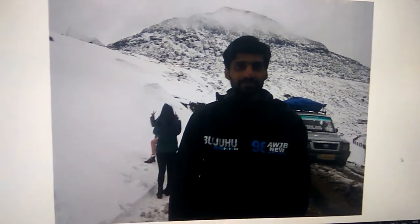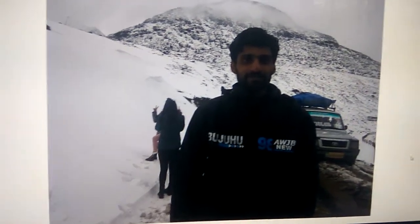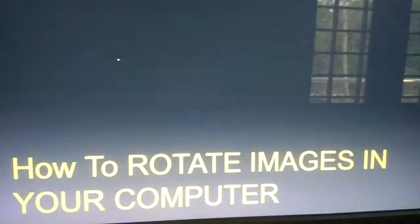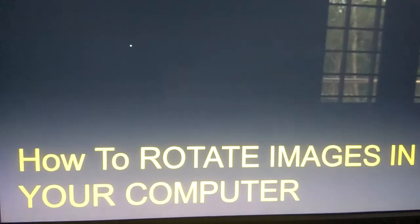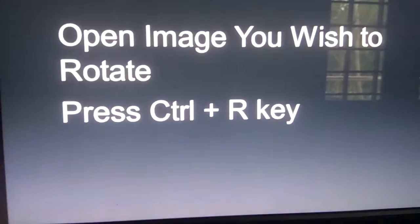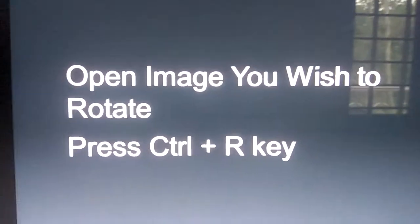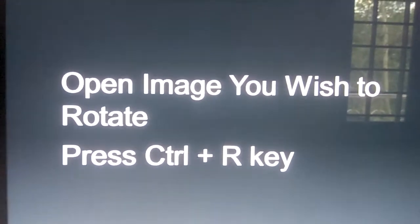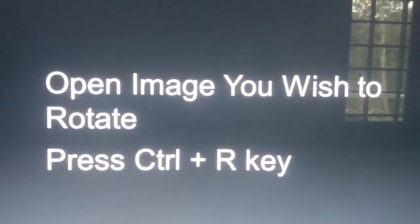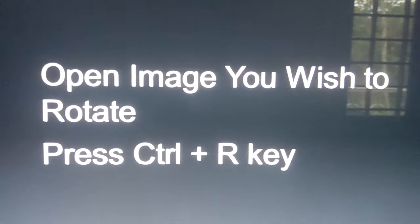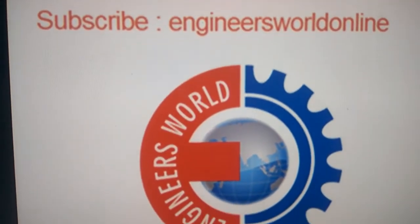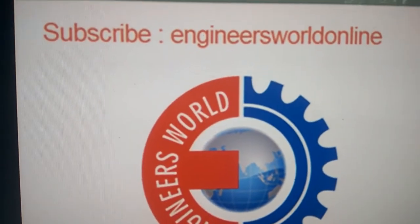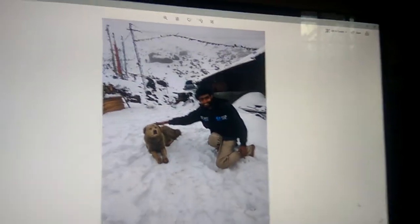To rotate images 90 degrees, press the Ctrl key and R key. Remember: open the image you wish to rotate and press Ctrl+R. Subscribe to our channel Engineers Online for more updates like this.